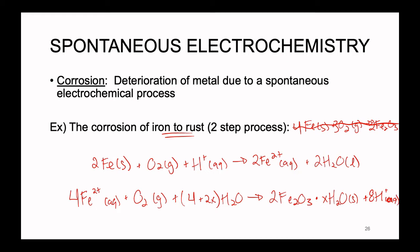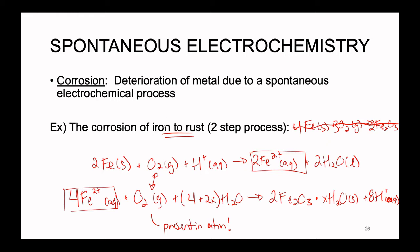We can see commonalities between these two steps. The Fe²⁺ generated in the first step is consumed in the second step. Both reactions require oxygen, which is present in the atmosphere. However, to start iron deteriorating spontaneously, we also need some H⁺ present — and H⁺ can actually be freely found in any water sample.